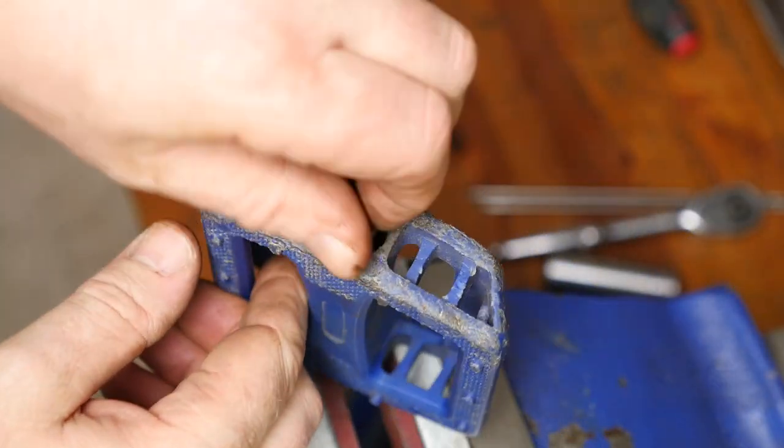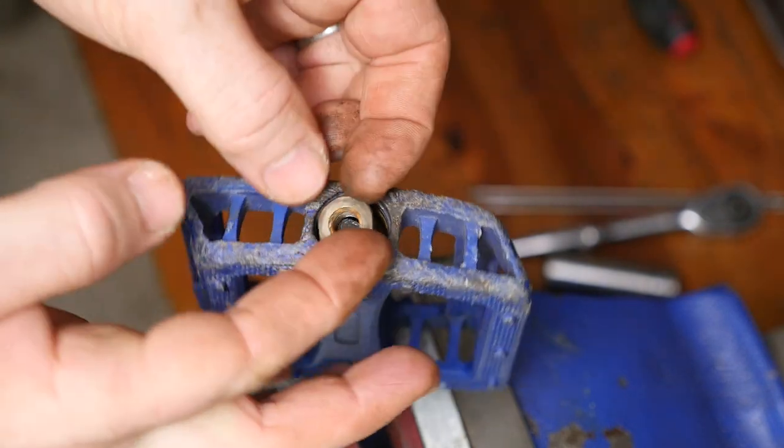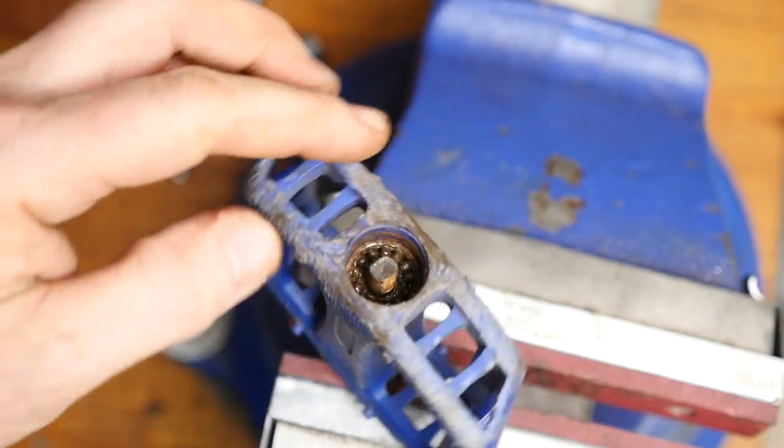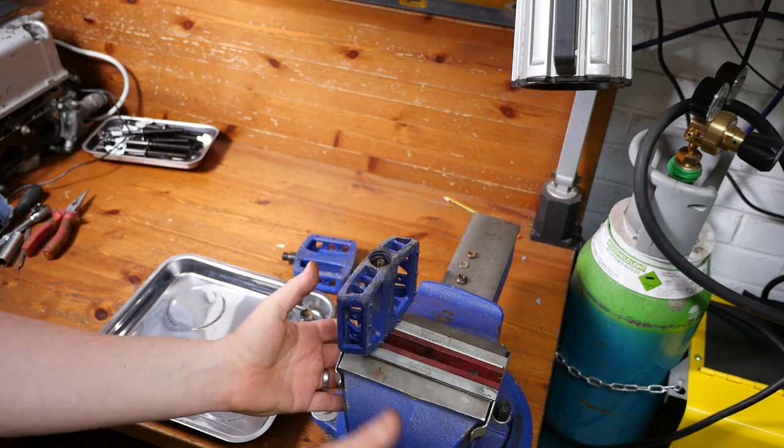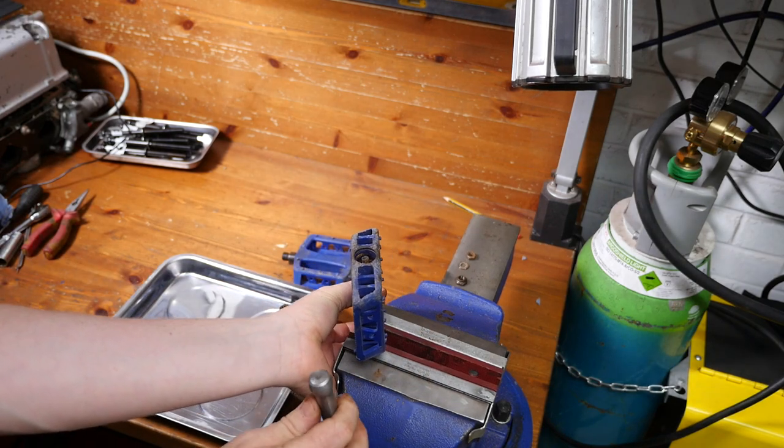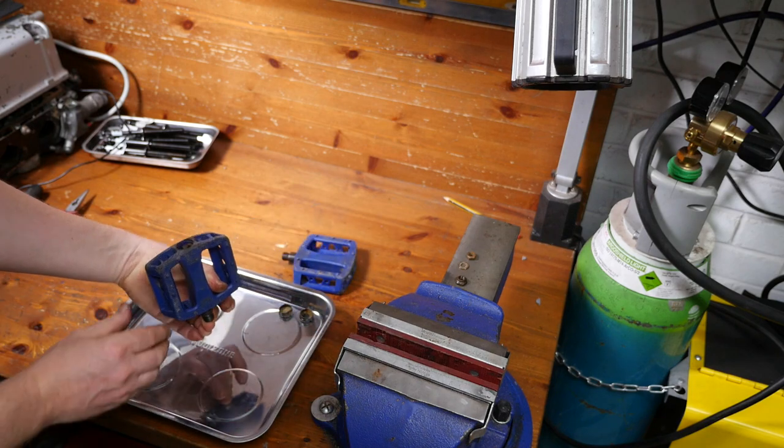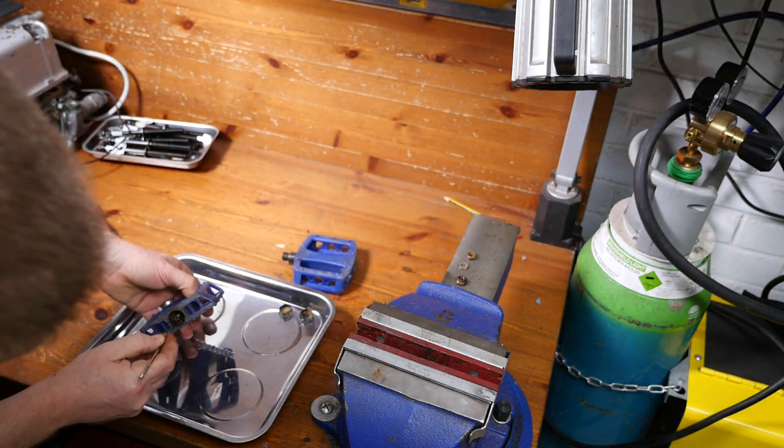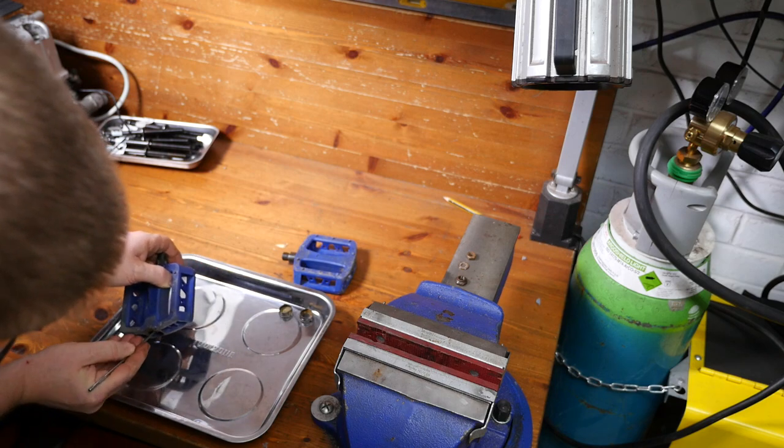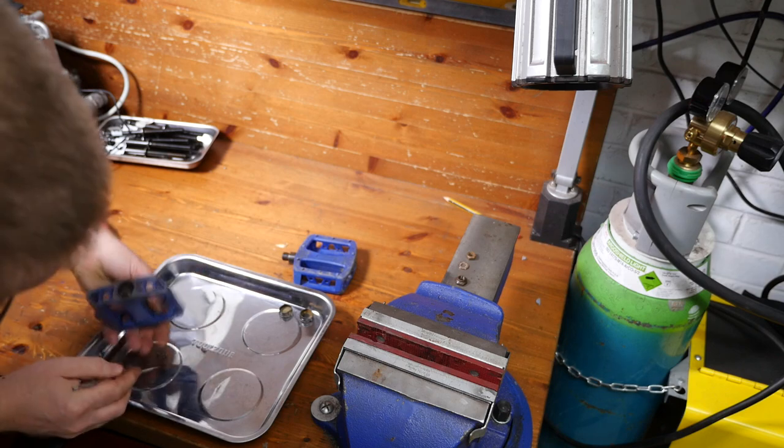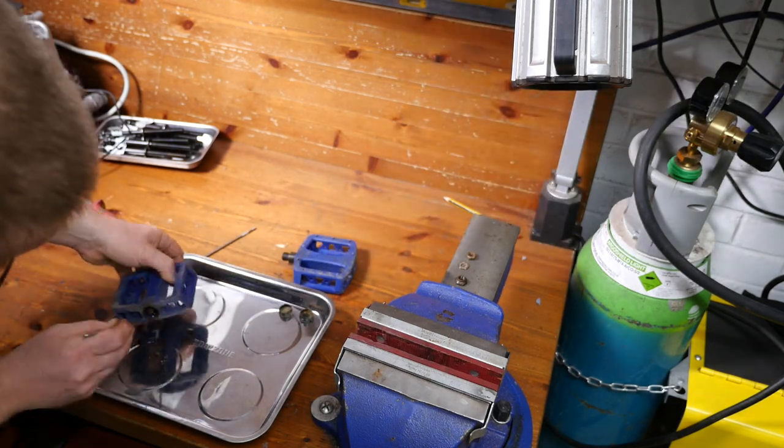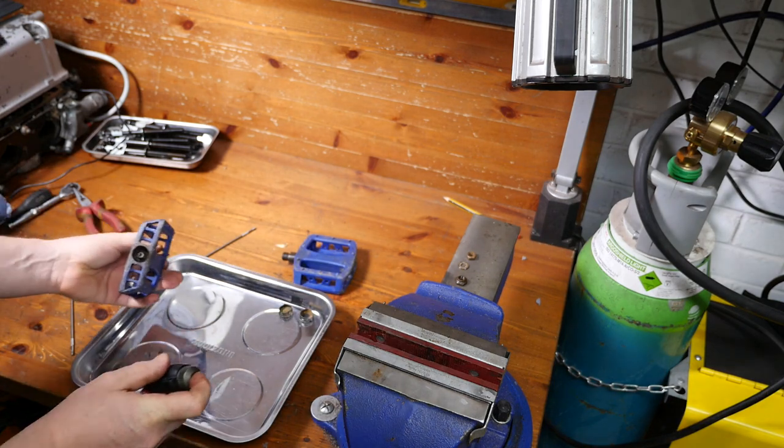So then once the cone's out you should be able to see the bearings. In this pedal there's 13 bearings, definitely no sign of grease in there. So when you take the pedal out of the vice ensure that you support the axle from underneath. Because if the axle drops it's highly likely the bearings will fall out with it all over your garage floor. And then get the pedal into a suitable container that will make sure you catch all those little bearings.